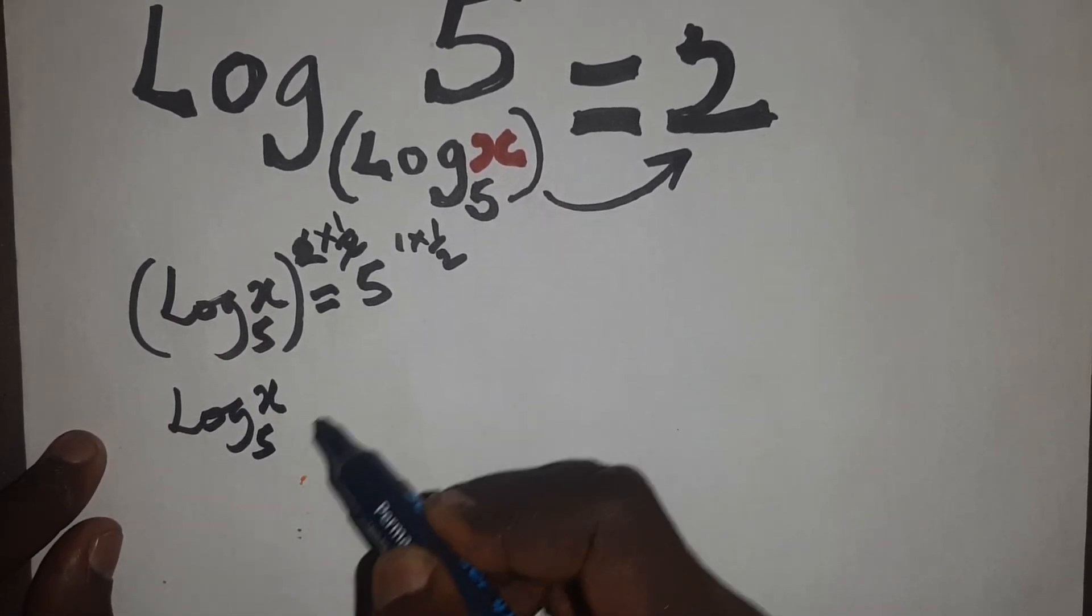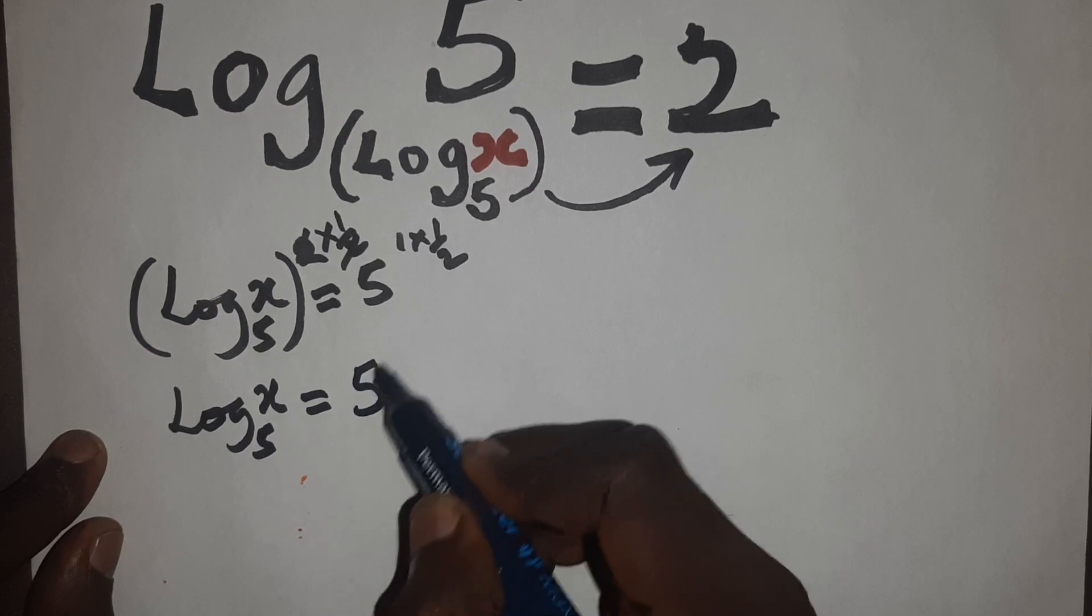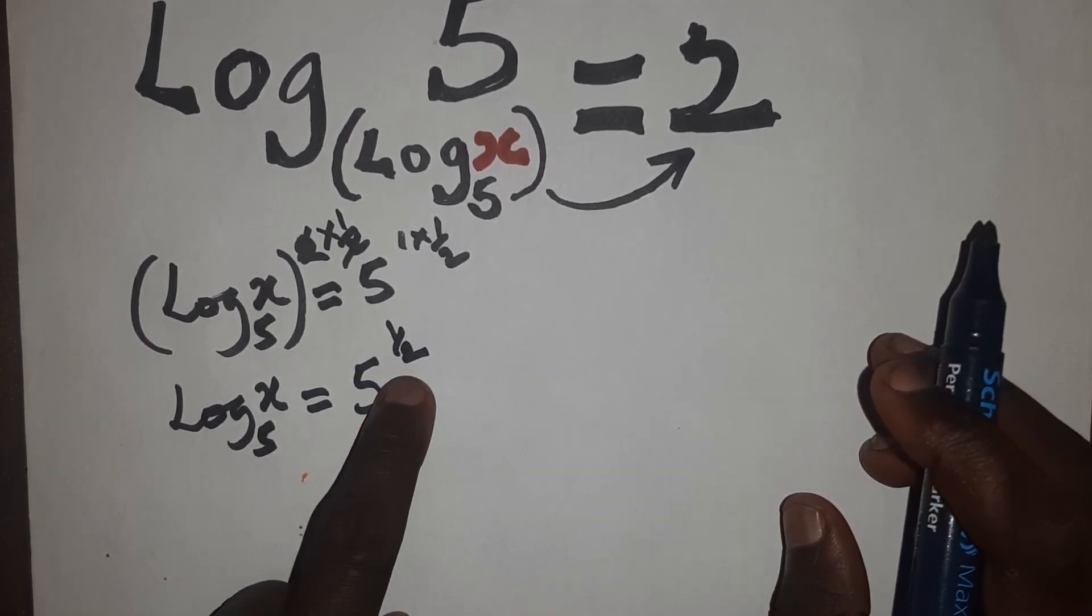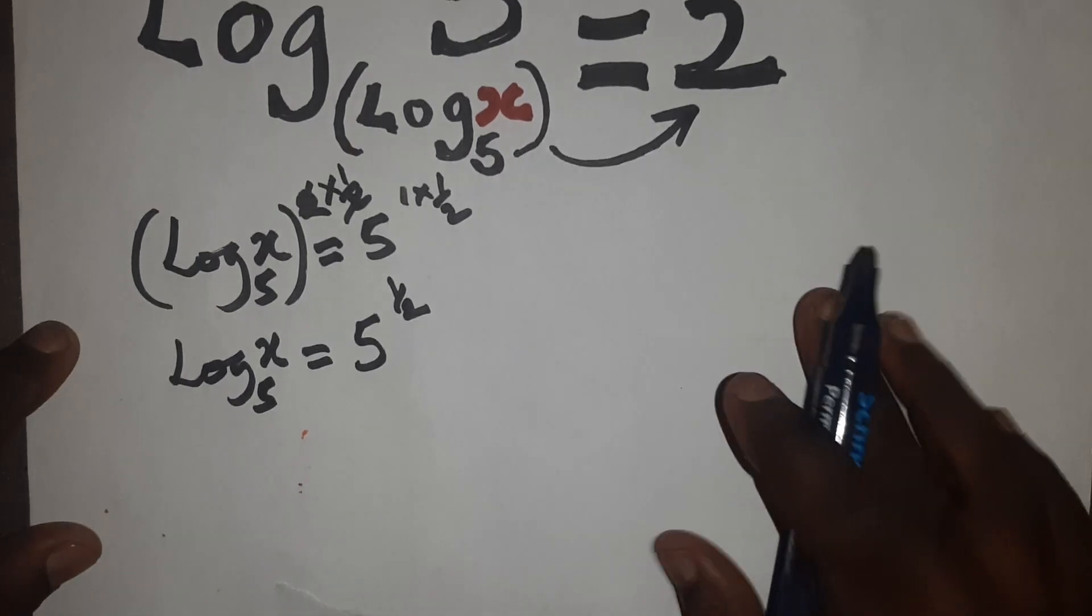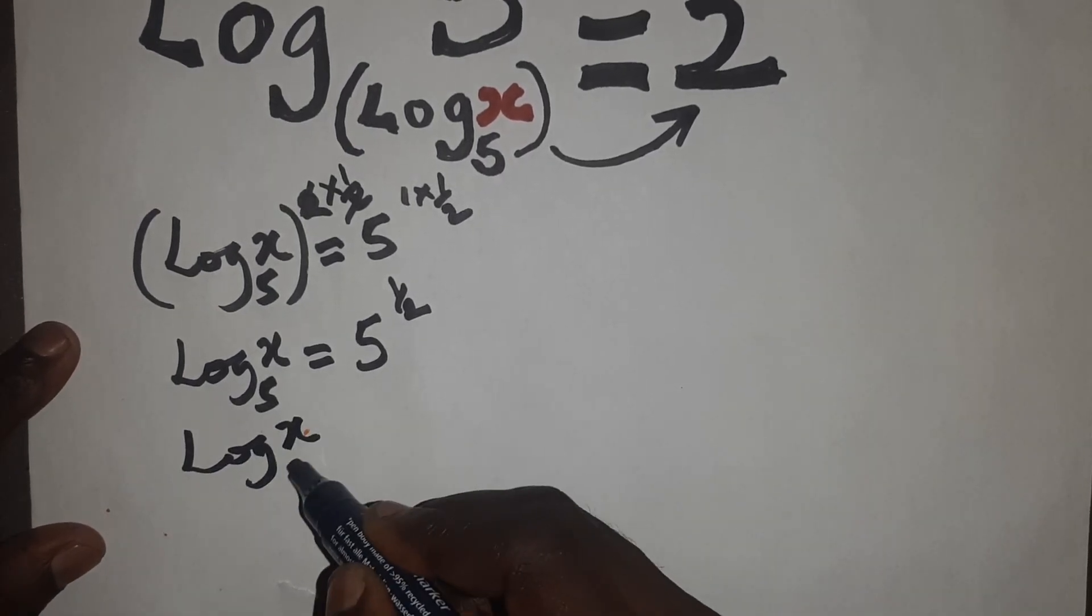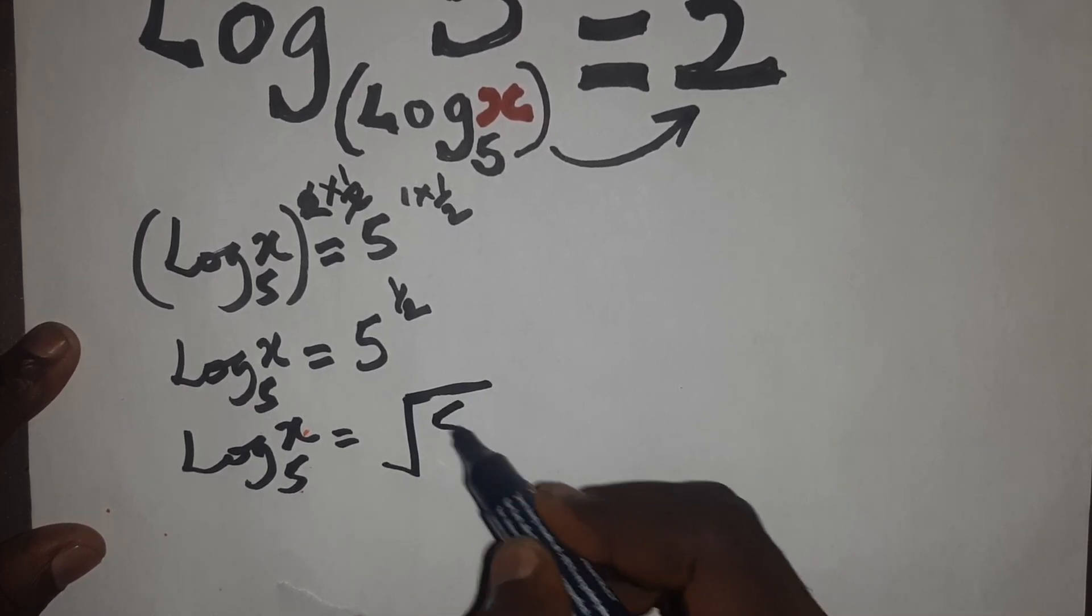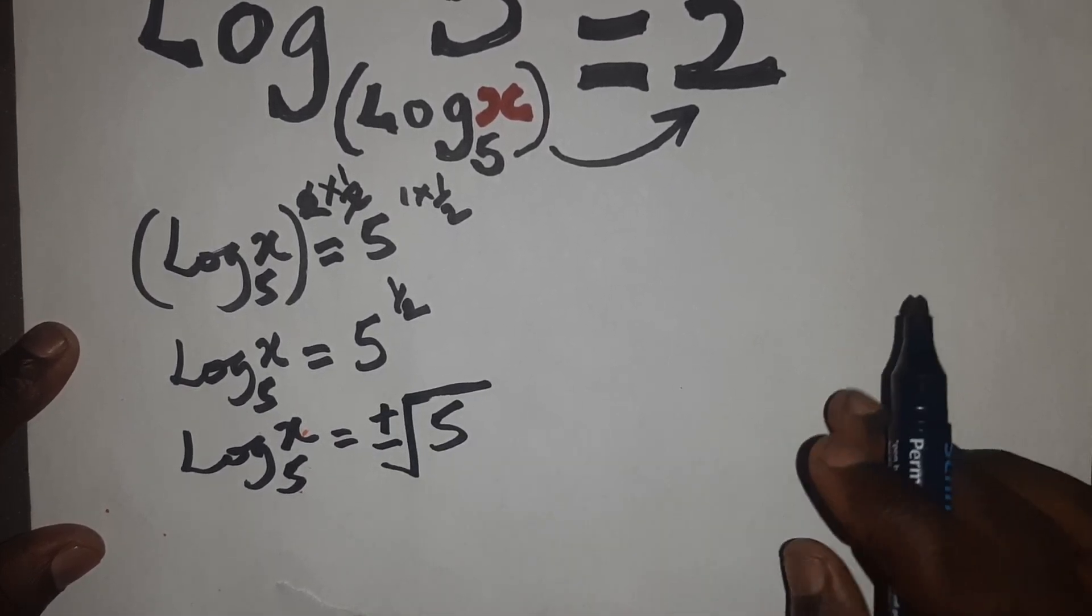Log x base 5 equals 5 raised to the power of 1 over 2. And of course, from laws of indices, 5 raised to the power of 1 over 2 also means root 5. So we now have log x base 5 equals to root 5. Of course, we have plus or minus root 5.